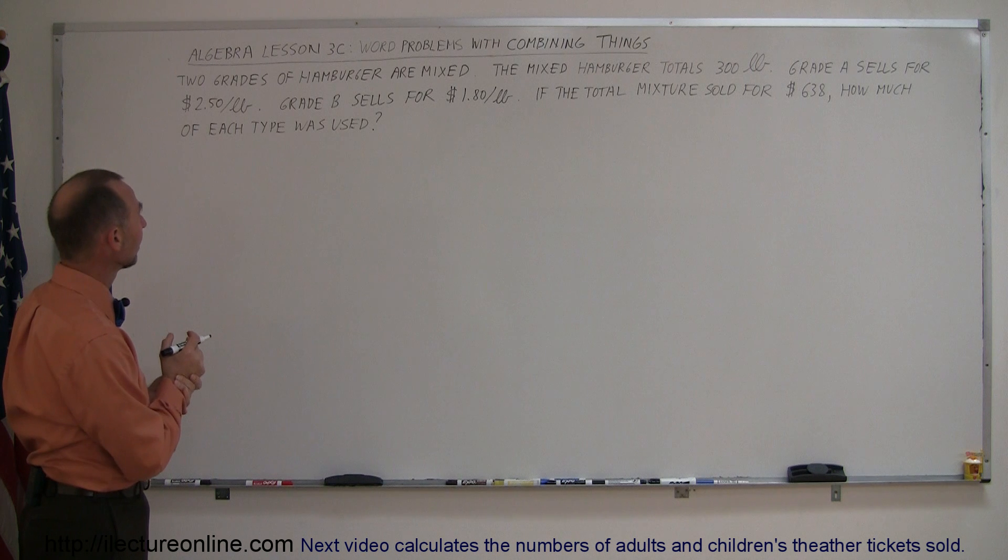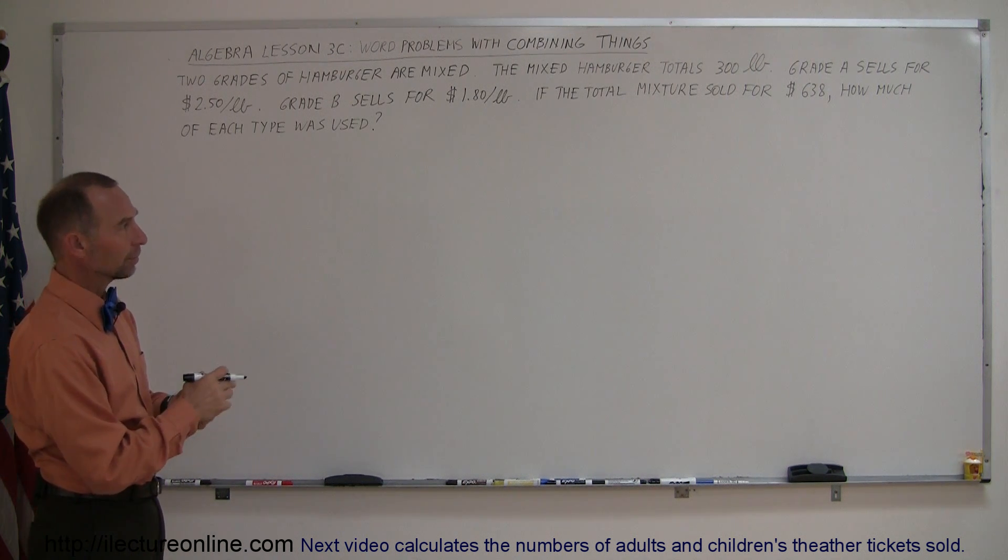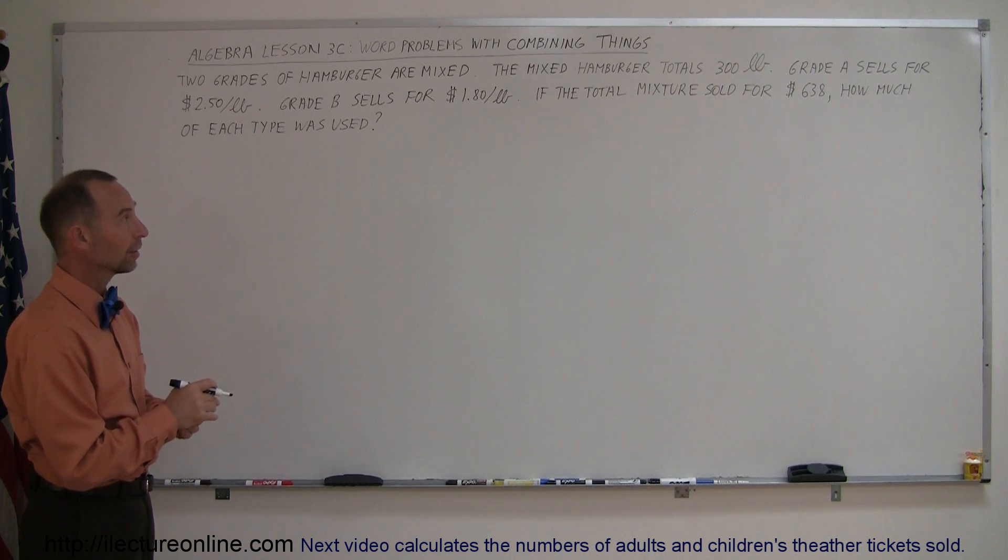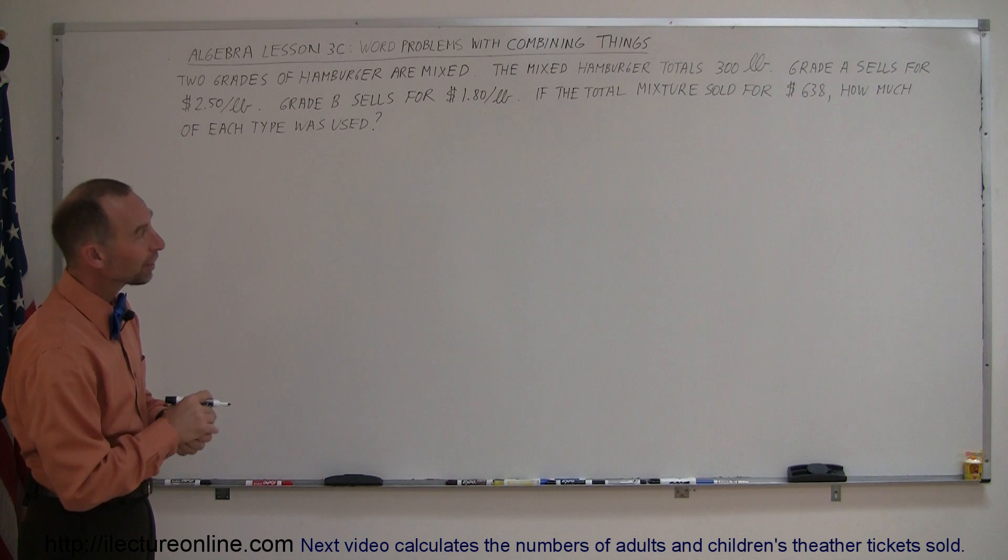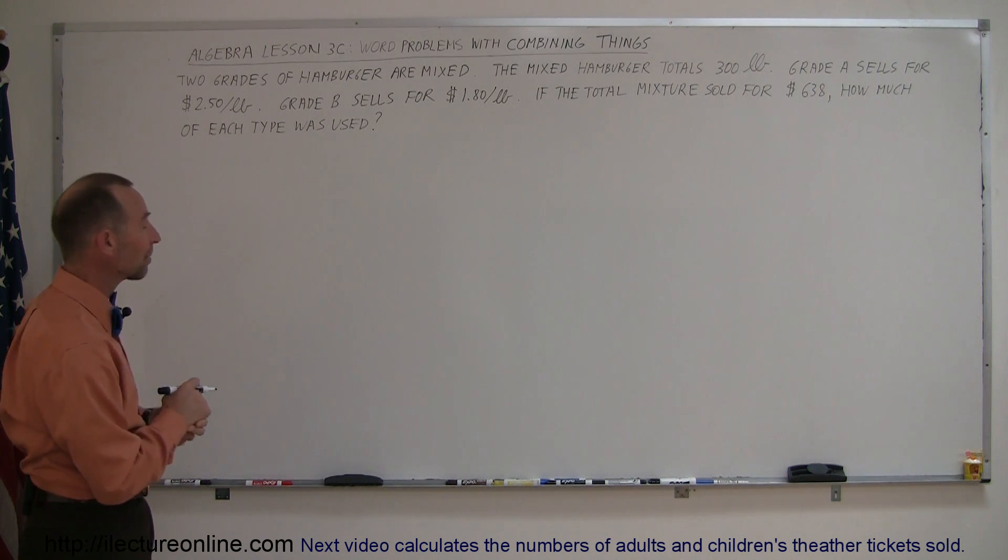Our first problem starts with two grades of hamburger are mixed. The mixed hamburger totals 300 pounds. Grade A sells for $2.50 a pound. Grade B sells for $1.80 a pound. If the total mixture sold for $638, how much of each type was used?